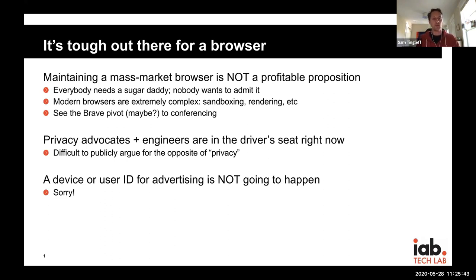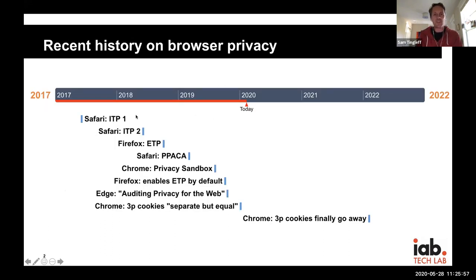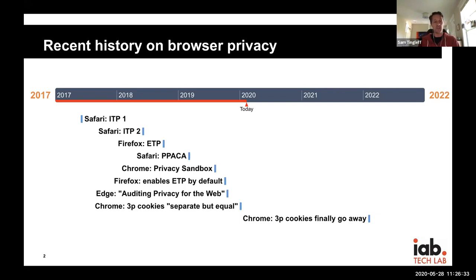Virtually none of the browsers would see a device or user ID for advertising purposes as an acceptable outcome. We have had conversations with almost all of them in private and in public, and there is effectively no universe in which a device or user ID for advertising purposes exists within the browser. Looking back at the recent past, Safari really kicked off what's happening right now, going back to 2017 and even earlier. As of now, all three — and even four, counting Edge — major browsers have publicly released a privacy positioning of some kind.